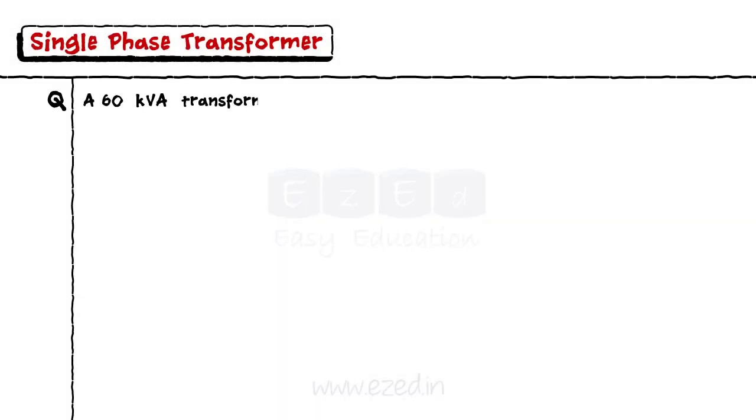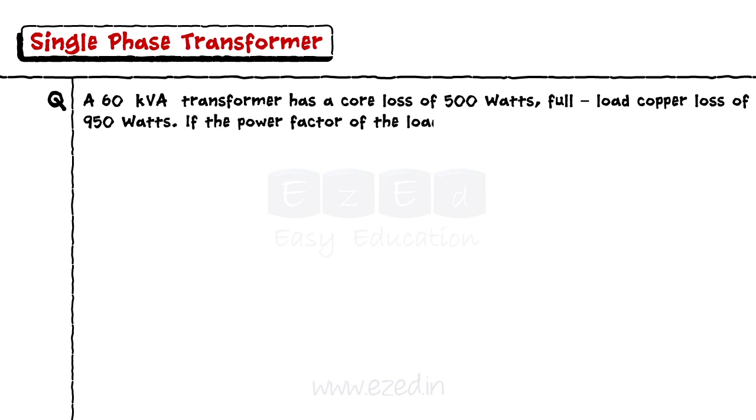A 60 kVA transformer has a core loss of 500 watts, full load copper loss of 950 watts. If the power factor of the load is 0.9,